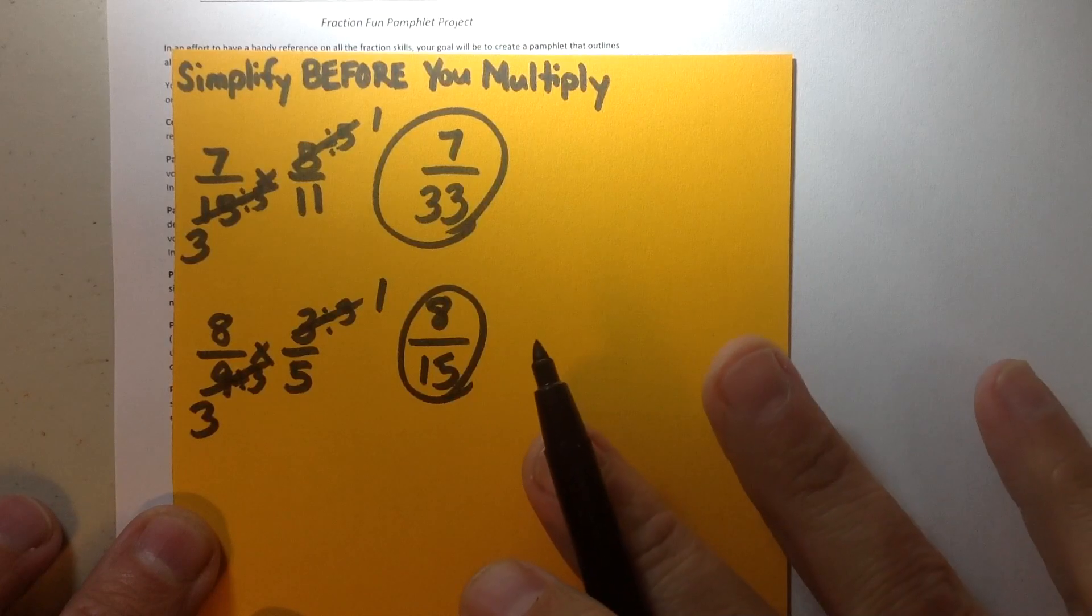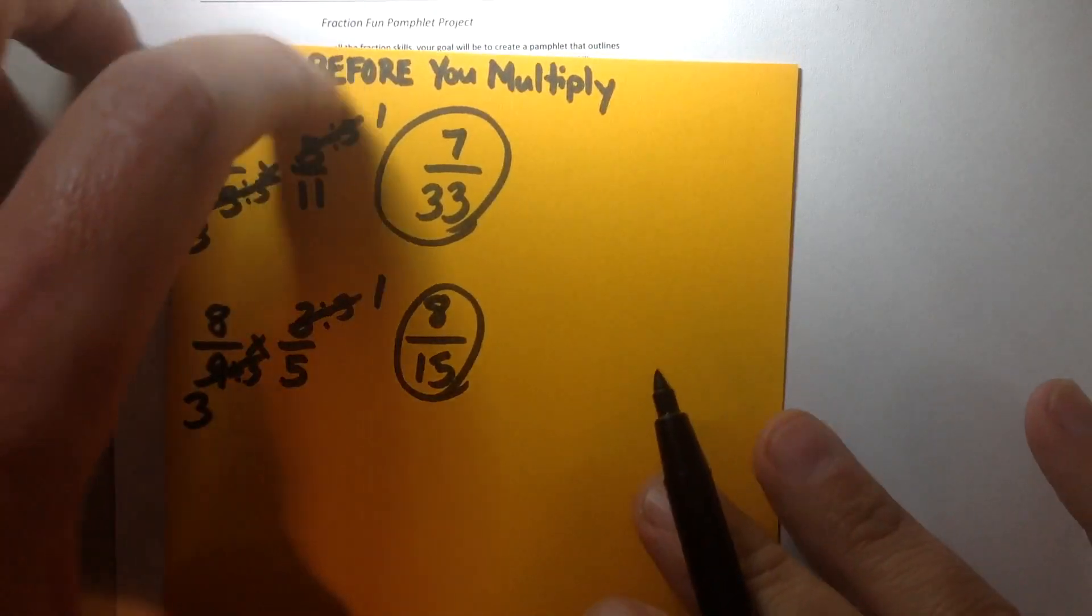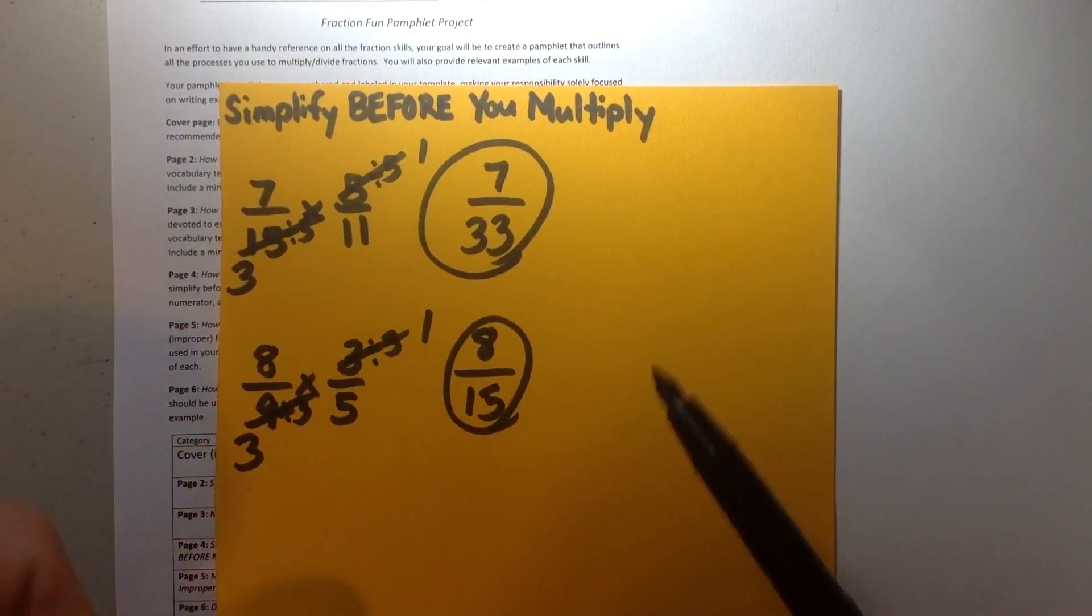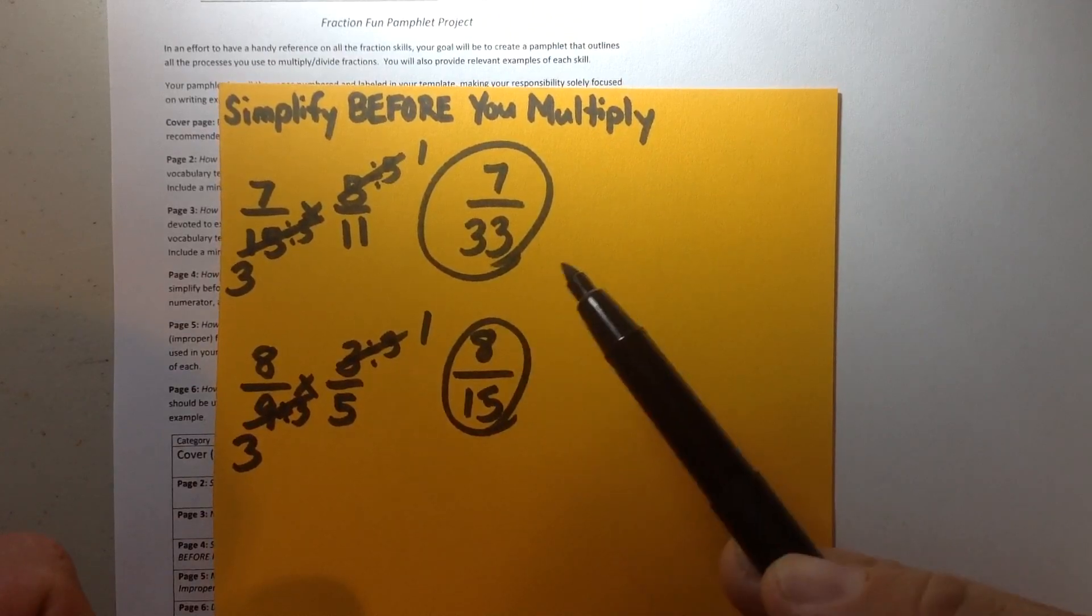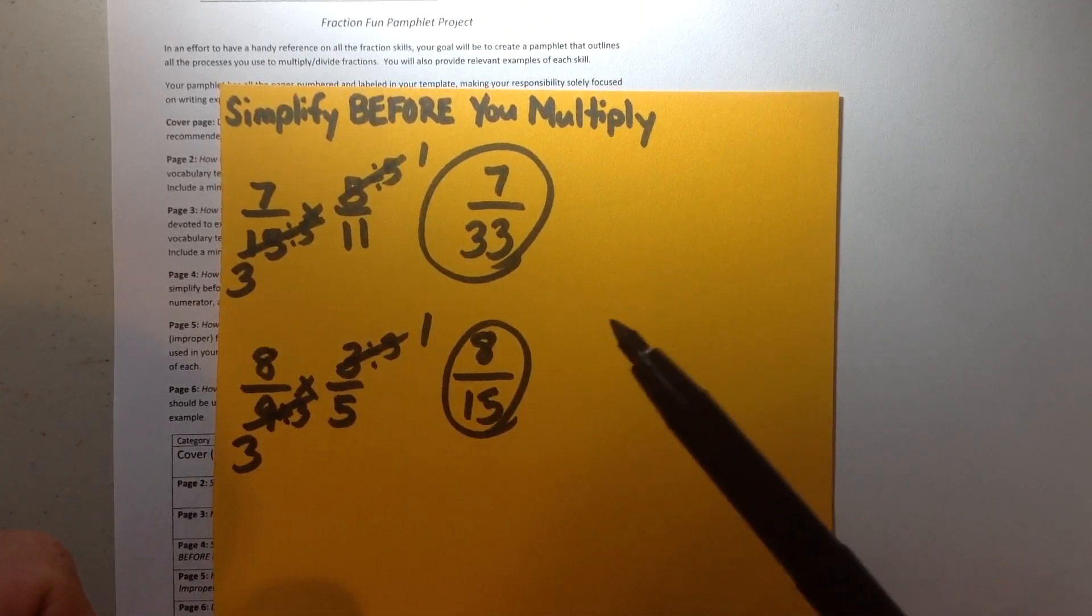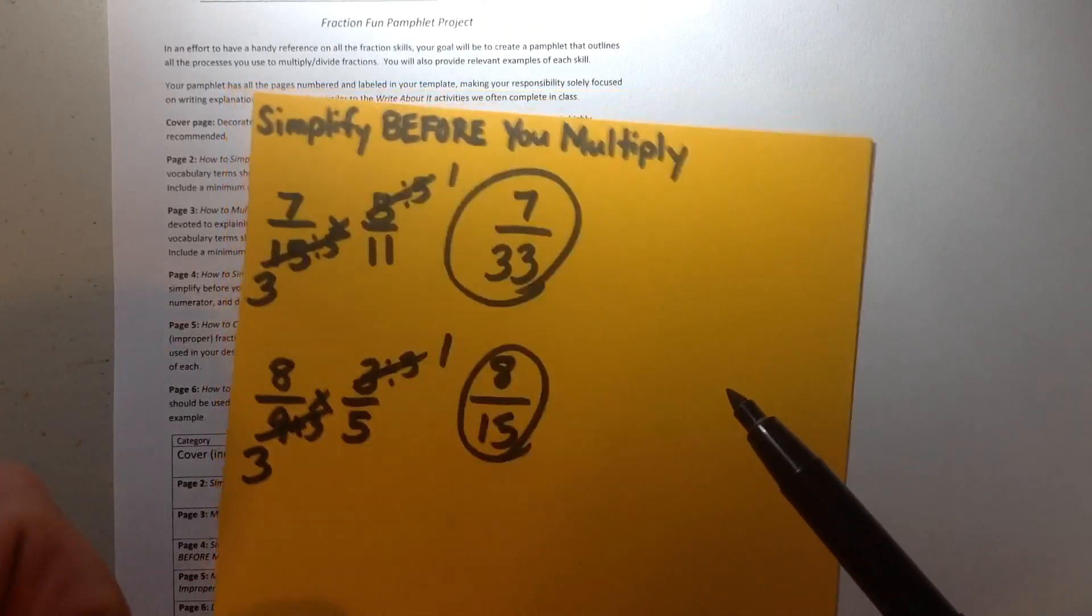Now again, I've shown that work, but that's not what the project is focused on, not just the examples, but actually explaining in words what I did. So you know that I worked on the diagonal, and I found numbers that had common factors. I divided by those common factors, so that way I had smaller numbers that are easy to work with, as we know that's a more efficient way to multiply fractions.